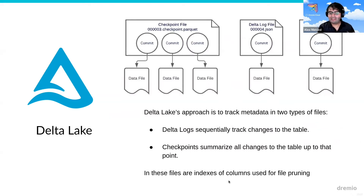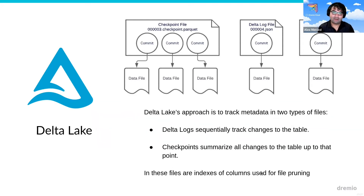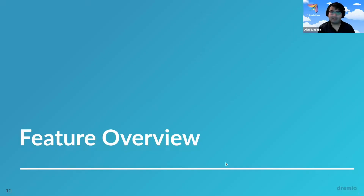In each of these files, there are indexes of columns. By default, I think it's the first 32 columns, which can then be used to prune files. Using those indexes on those files, you can identify which files have what data — we don't need this file for this query, we don't need that file — in the same way that Hoodie can use the metadata table and Iceberg can use metadata from the manifest and manifest list to reduce the files it's scanning. So there are just different approaches to solving the same problem: one, allowing the processing engine to identify what is the table, and two, how can we narrow down the amount of files we need to scan? Because the less files you have to scan, the faster your query is going to be.